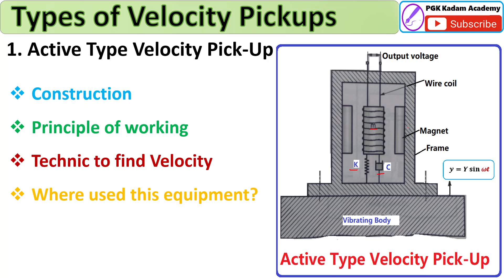The wire coil is mounted on the magnet with mass m. Two surrounding magnets are there, and inside the frame the mass and dashpot are filled. When this instrument is fixed on the vibrating body, the vibrating body has displacement y. When it vibrates, the output voltage changes according to vibration, directly proportional to the relative motion between the coil and magnet.